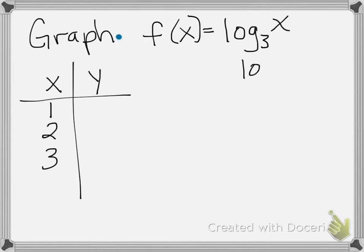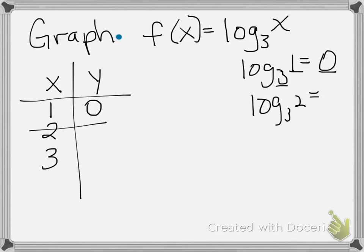That would be log base 3 of 1, and we actually have done this before, it's going to be 0, because 3 to the 0 power would equal 1. If I do 2, that would be log base 3 of 2. This one's not going to work out so well, so probably I'm going to say that was a bad choice. Let's try 3. Log base 3 of 3 is going to be 1, because 3 to the first power equals 3. So for 3 I have 1.